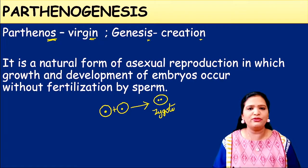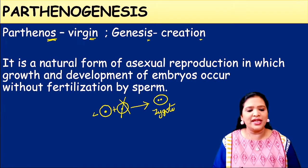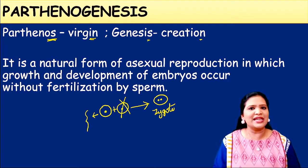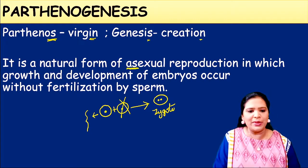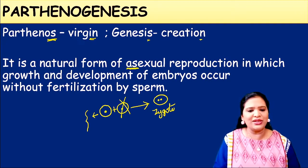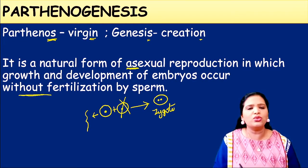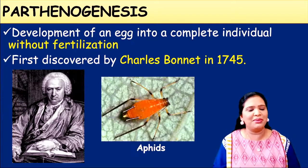But in Parthenogenesis, instead of the female gamete fusing with the male gamete, this fusion does not occur. Instead, just the female gamete develops into an embryo. So Parthenogenesis is a natural form of asexual reproduction in which the organism grows and develops into an embryo without fertilization. No fertilization occurs in Parthenogenesis.